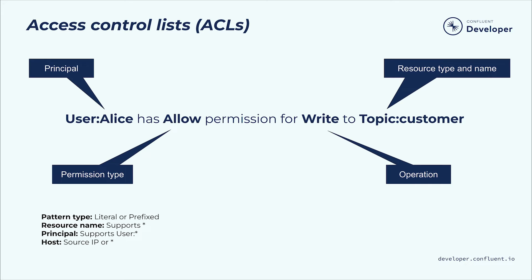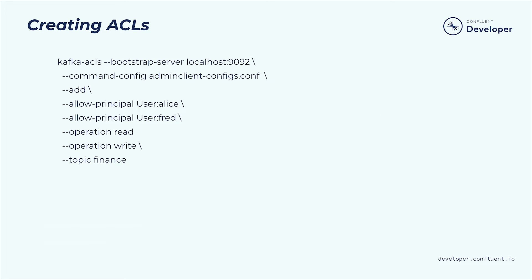You can also specify a host value that further limits the permission based on the source IP address of the connection with which the principal is associated. You can create and manage ACLs using the kafka-acls command line tool. Here you can see an example of using kafka-acls to create ACLs that allow Alice and Fred to write to and read from the finance topic.